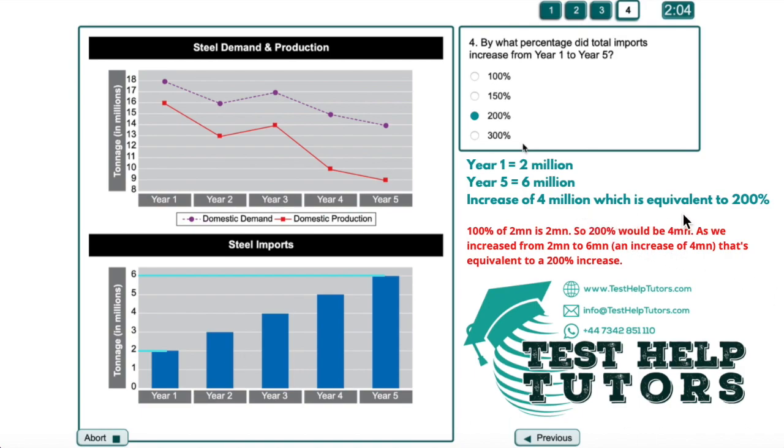That's equivalent to 200%. The reason is we know 100% of 2 million is 2 million. So 200%, doubling this, would be 4 million. As we increase by 4 million, so 2 million plus 4 million gives you 6 million. That's equivalent to a 200% increase.